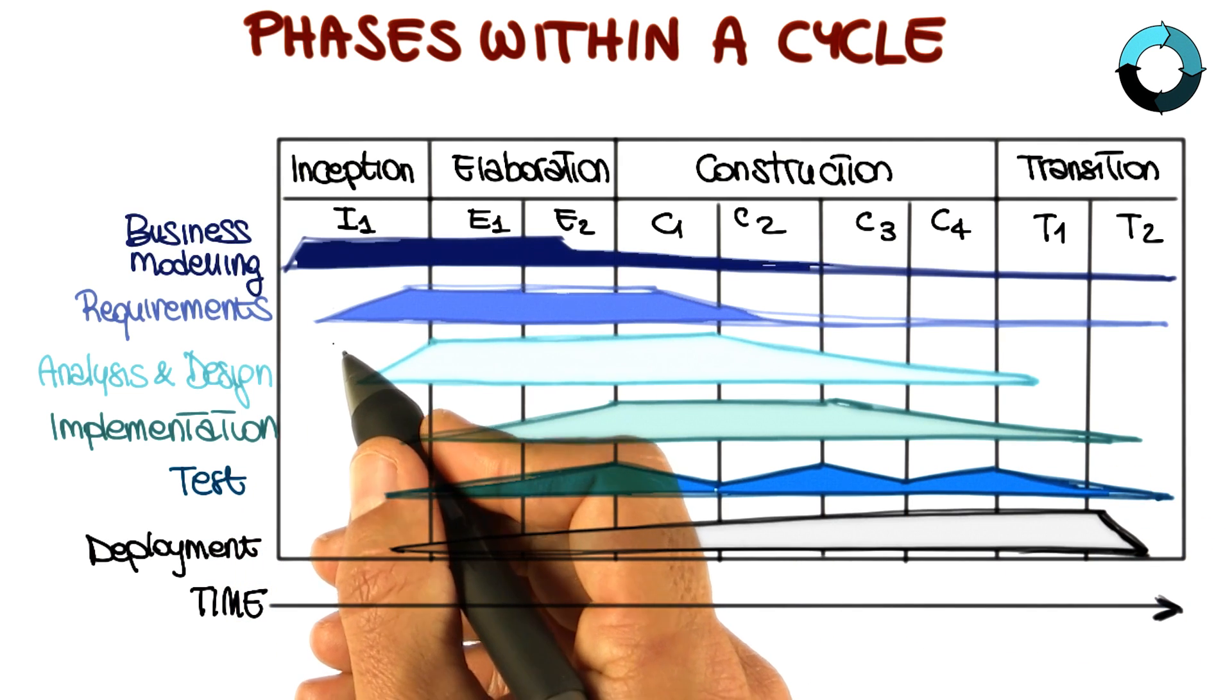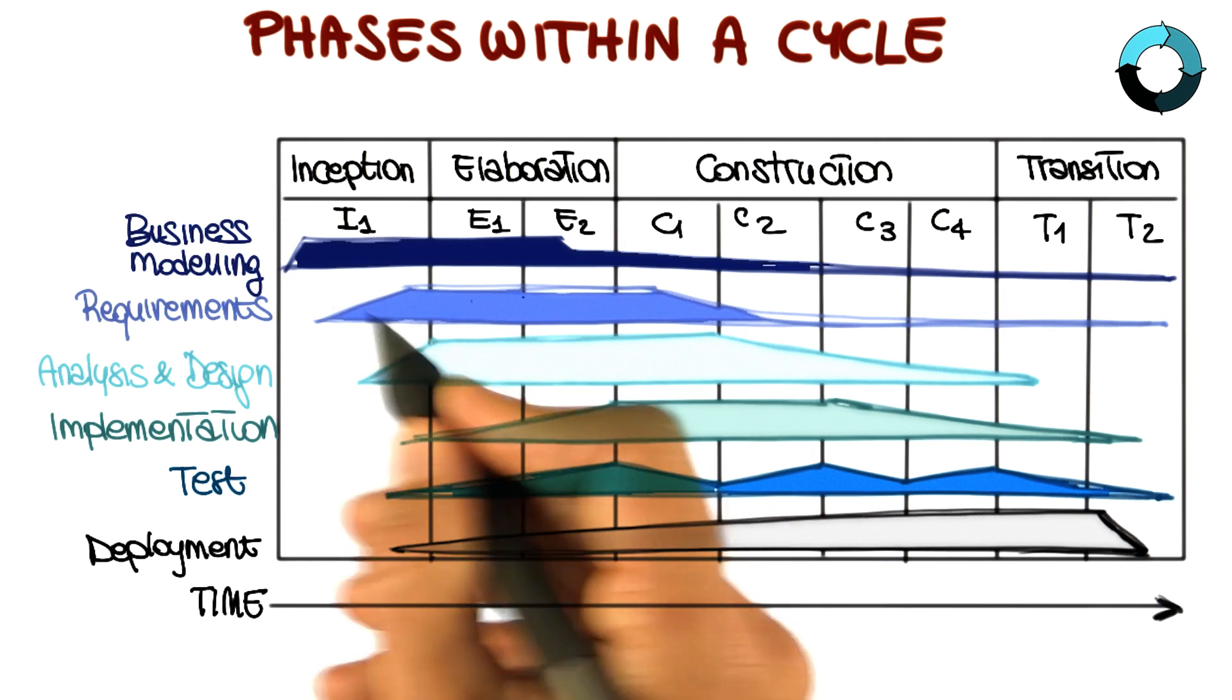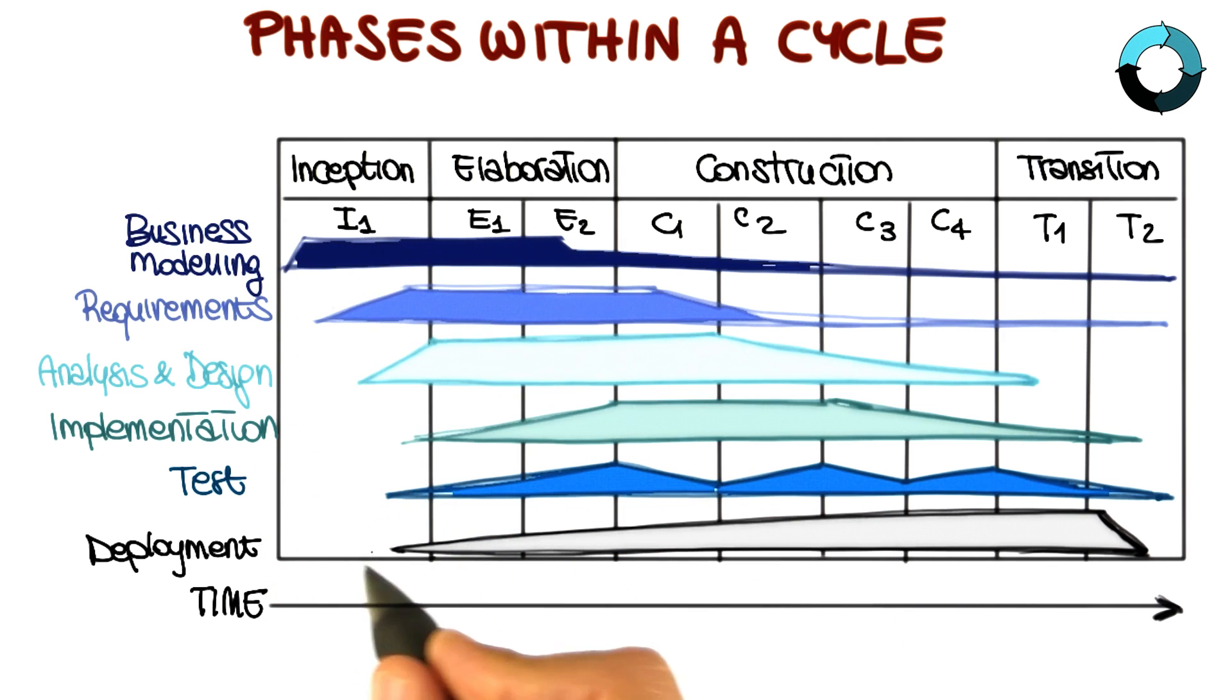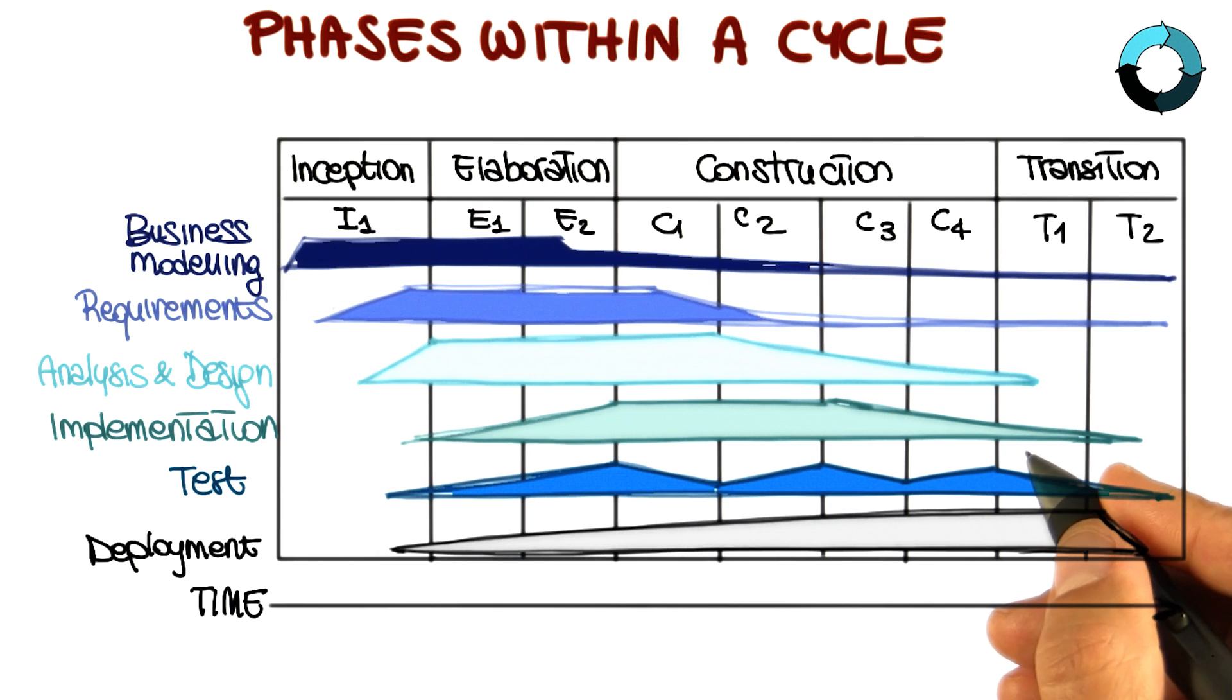And to conclude, we have the business modeling activity, that happens mainly in the inception and a little bit in the elaboration phase, and the deployment activity, which happens a little bit throughout, but the bulk of it is really in the transition phase, which is the phase that has to do with deployment and maintenance.